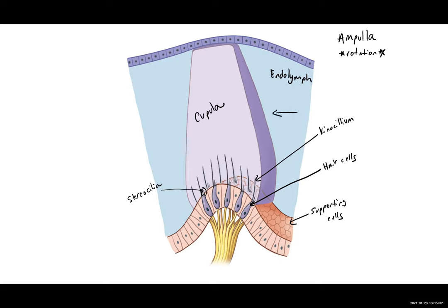As that endolymph is moving because of rotation of the head, that's going to force movement of the cupula, which in turn causes movement in the kinocilia or stereocilia. Based on the direction and how far they're bent, that information gets sent on to the nervous system.